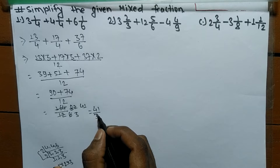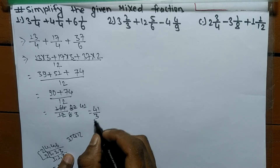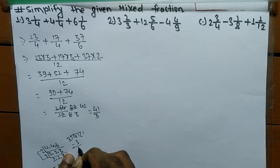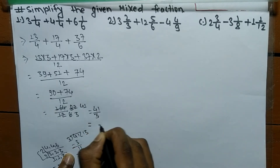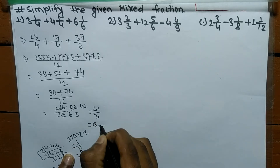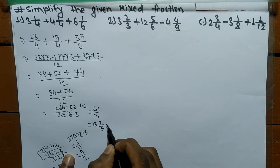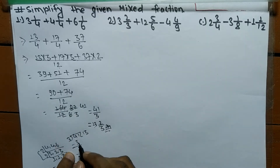Now we have to convert 41 by 3 into a mixed fraction. So 41 divided by 3: 3 times 13 means 39, and the remainder is 2. So it is equal to 13 whole 2 by 3, which is our answer. In this way we can simplify mixed fractions.